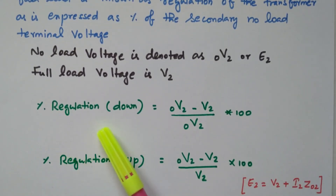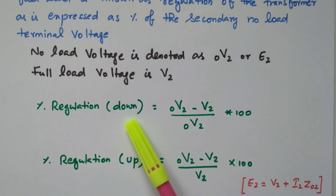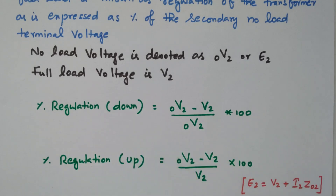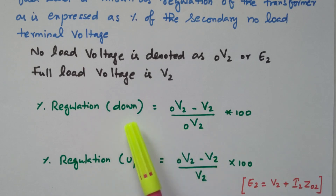The percentage of regulation has two types: down and up. The difference in voltage between no load and full load, divided by the no-load voltage and multiplied by 100, gives regulation down. If it is divided by the full-load voltage, that is called regulation up. So based on that: dividing by no-load voltage means regulation down, dividing by full-load voltage means regulation up.